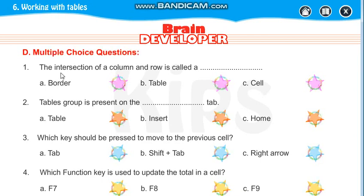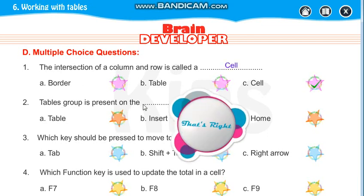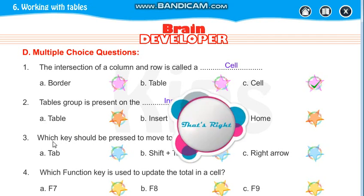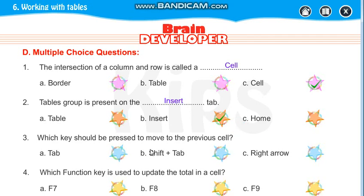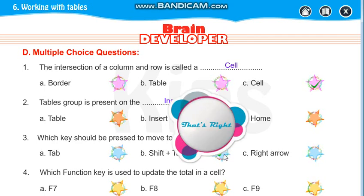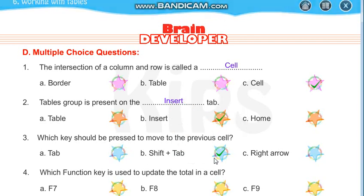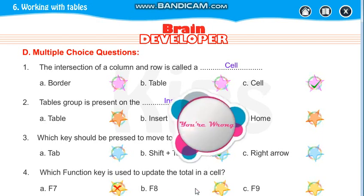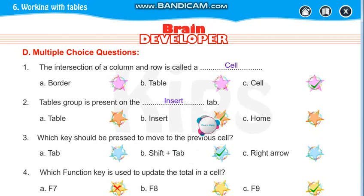Multiple choice questions. The intersection of column and row is called a cell. Table group is present on the Insert tab. Which key should be pressed to move to the previous cell? Shift plus Tab. Which function key is used to update the total in the cell? That is F9.